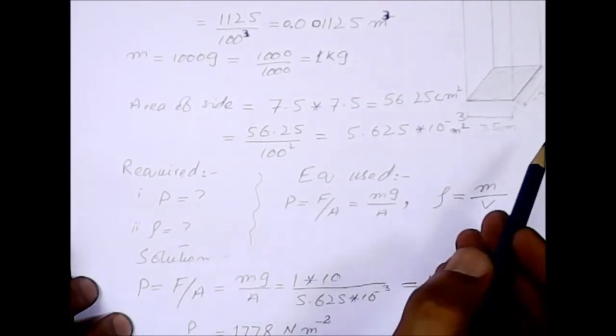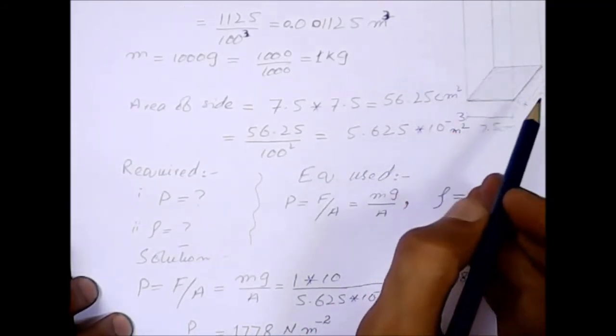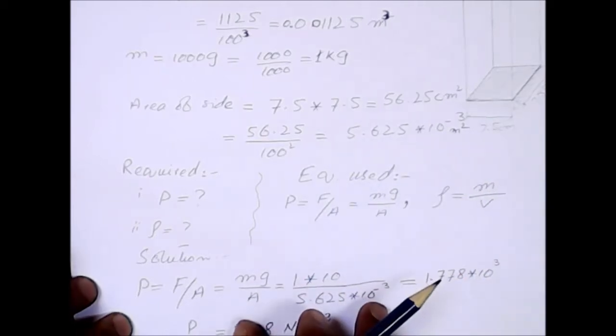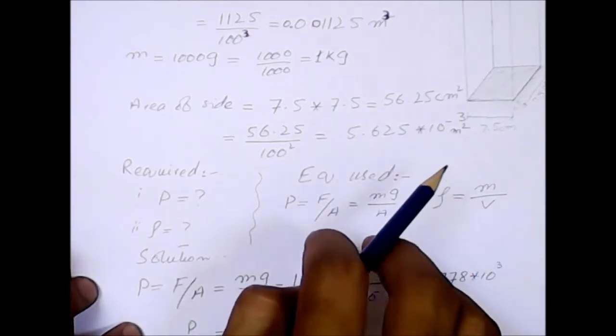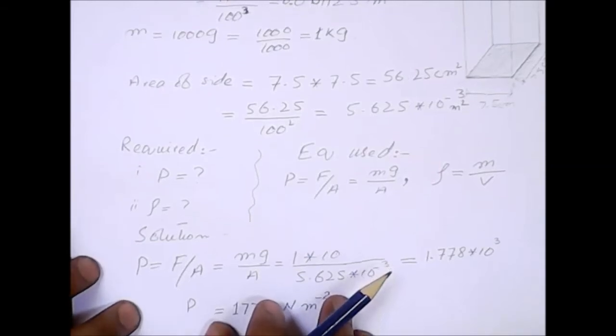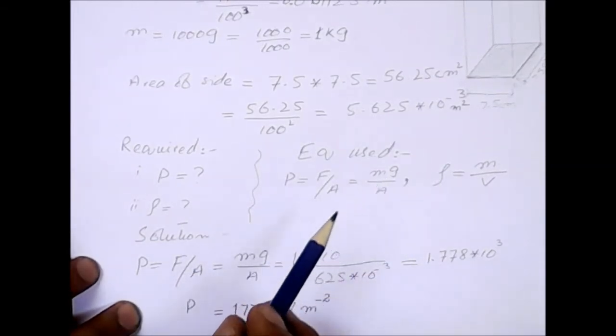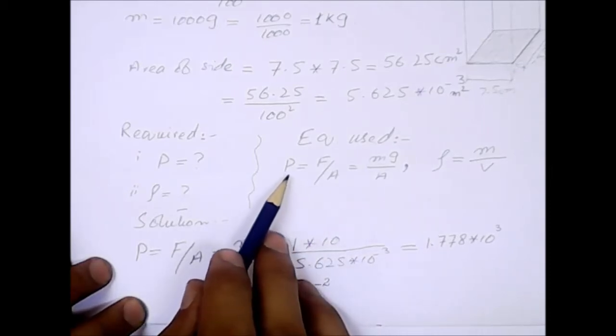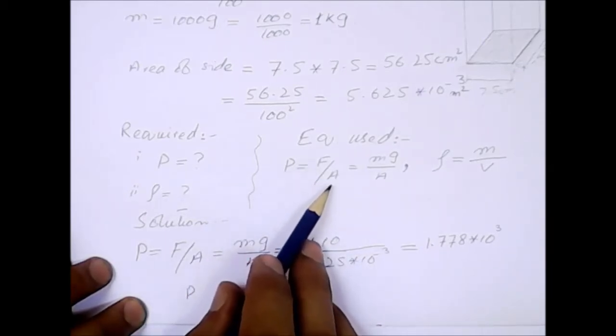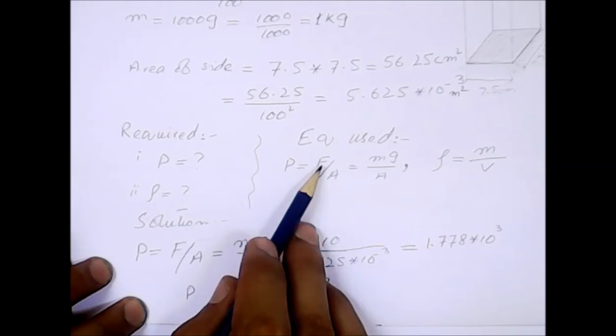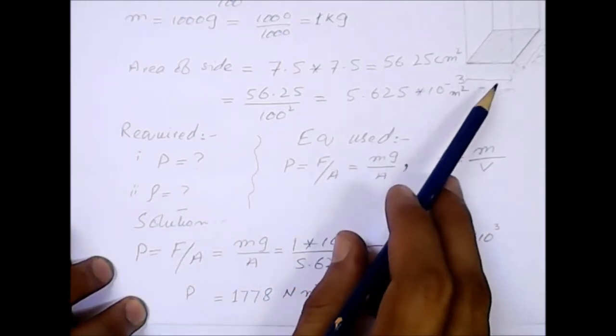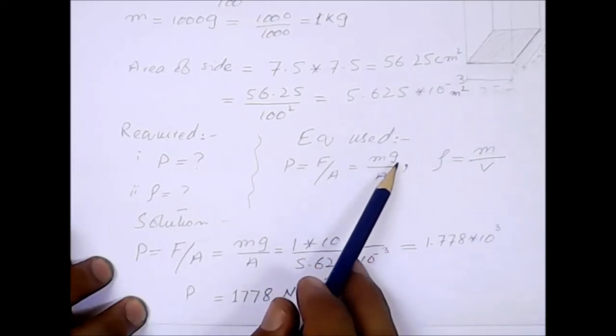In this numerical, we need to find the pressure exerted by the wooden block on the horizontal surface. The pressure is exerted by the weight. Pressure formula is P = F/A, where force is the weight, which is mass times gravitational acceleration.